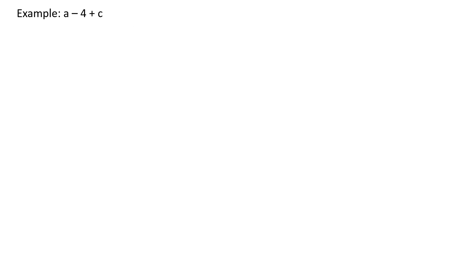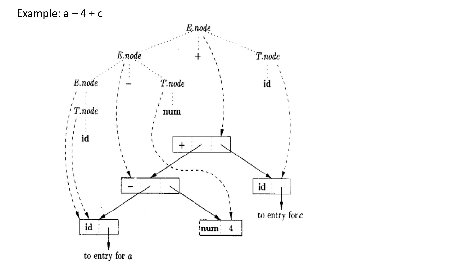For example, we have a minus 4 plus c. Using the sdd we made earlier, we created this parse tree. As you can see, these are the set of productions that we have used.